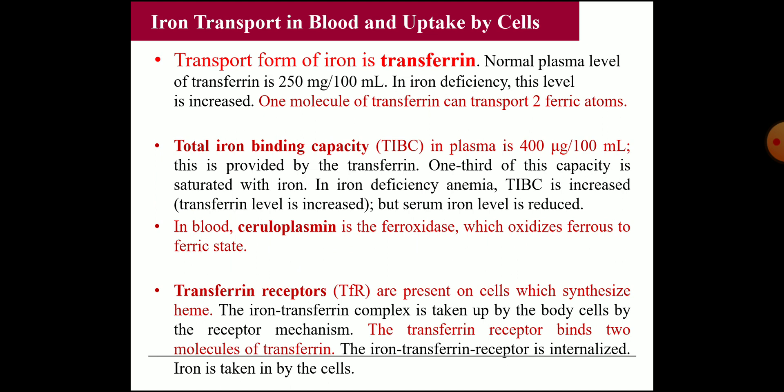The TIBC — Total Iron Binding Capacity — in plasma is 400 micrograms per 100 ml, provided by transferrin. One third of this capacity is normally saturated with iron. In iron deficiency anemia, the TIBC is increased while serum iron level is decreased. In the blood, ceruloplasmin acts as ferroxidase to oxidize ferrous to ferric. Transferrin receptors on cell membranes — particularly where hemoglobin synthesis occurs — take up the iron-transferrin complex into the cell, where it is internalized and iron enters the cell for use.